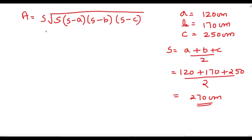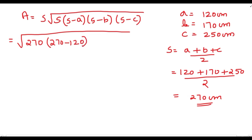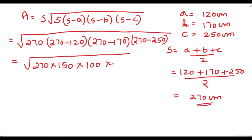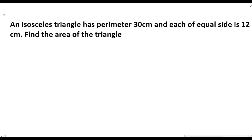Area = √(s(s − a)(s − b)(s − c)). With a = 120, b = 170, c = 250, the semi-perimeter s = 270 cm. Substituting: √(270 × (270 − 120) × (270 − 170) × (270 − 250)) = √(270 × 150 × 100 × 20) = 9000 cm². The area of this triangle is 9000 cm².